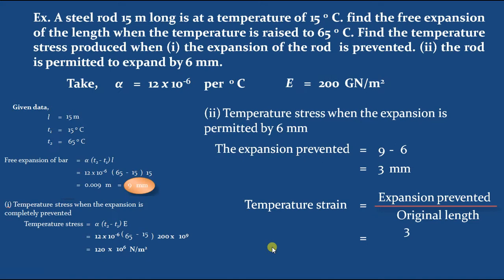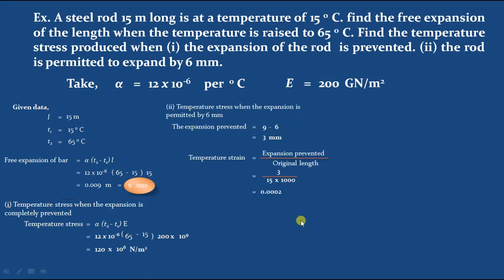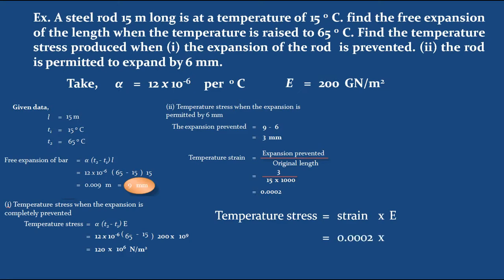Temperature strain = expansion prevented (3 mm) divided by original length (15 meters, converted to 15000 mm), giving 0.0002. Then temperature stress = strain into Young's modulus = 0.0002 into 200 into 10 power 9 = 40 into 10 power 6 Newton per meter square. This is the temperature stress when the expansion is permitted by 6 mm, or expansion prevented up to 3 mm.